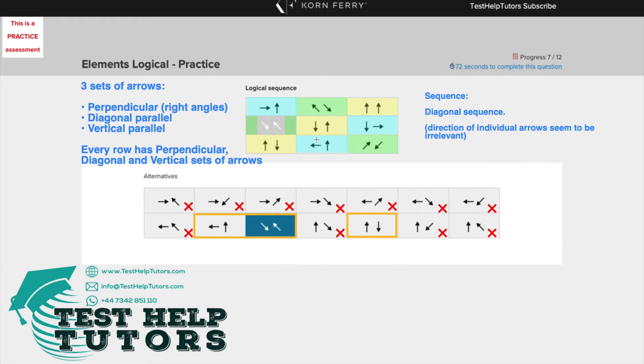So we've either got perpendicular, diagonal, or vertical. Again, we've only got vertical and perpendicular here. So these are the three types of arrows that we have.